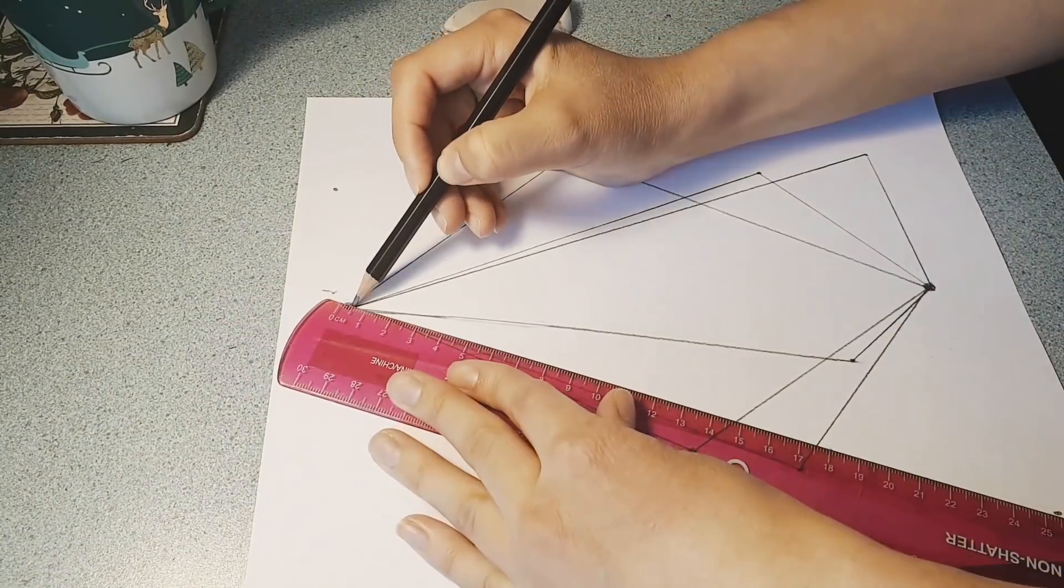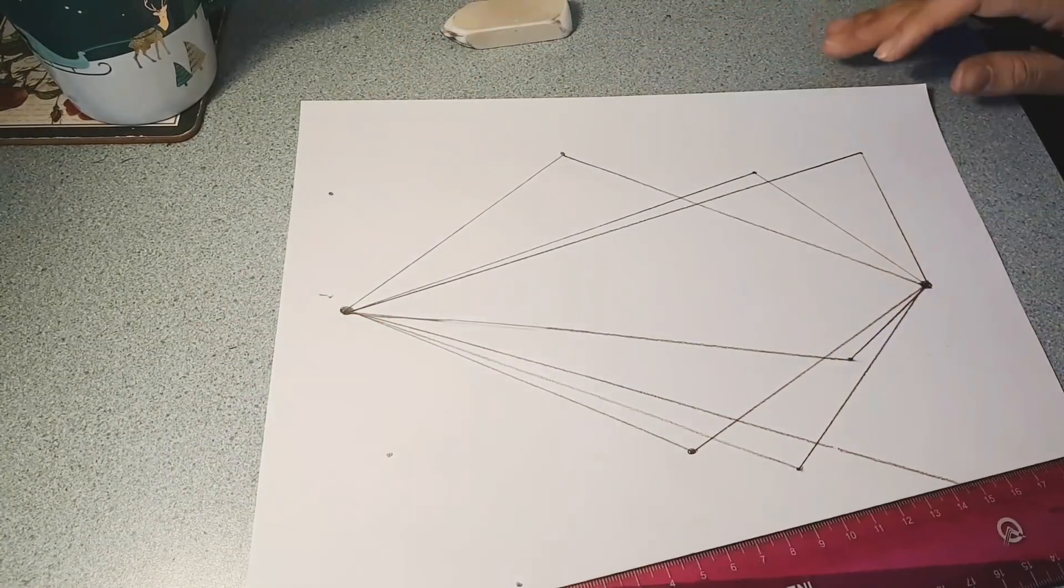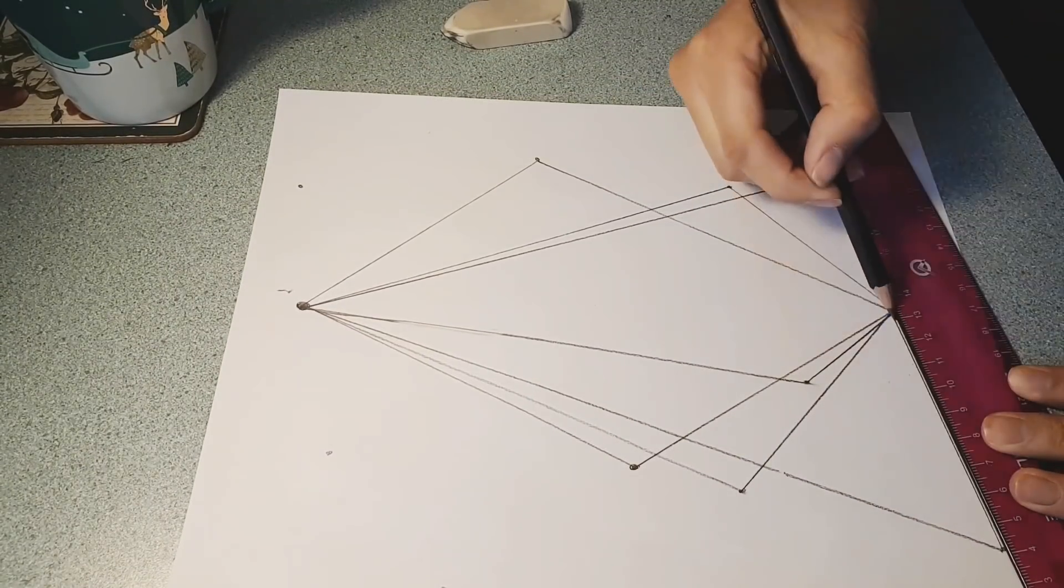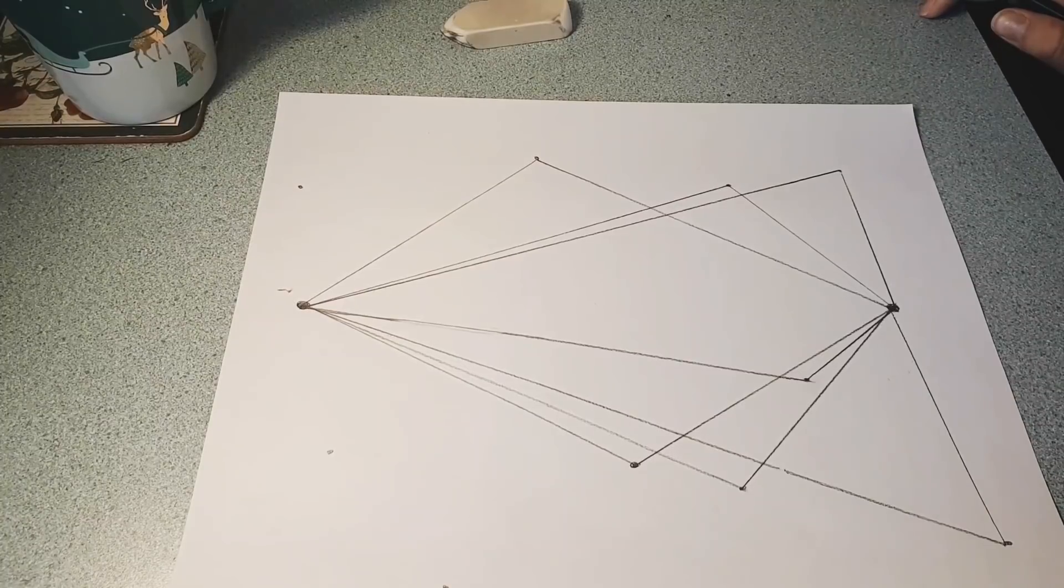Can you recognize any shapes on the page as we connect our dots? One familiar shape might be a triangle. Can you find any other shapes?